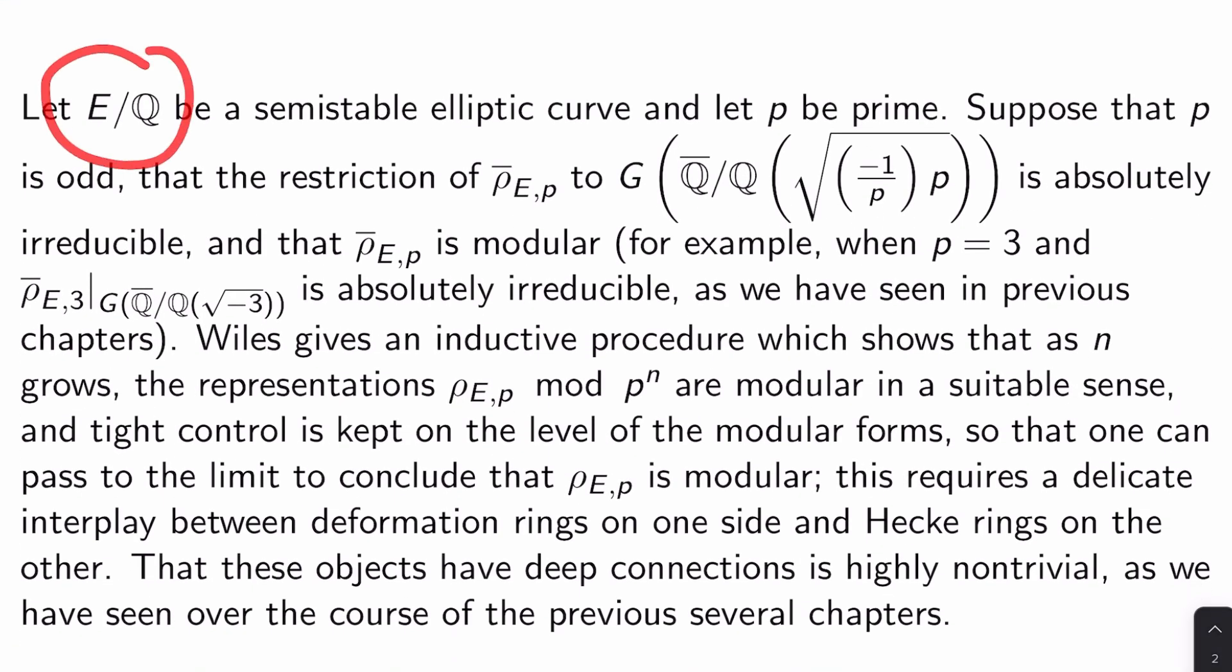Let E over Q be a semi-stable elliptic curve and let p be an odd prime. Suppose that the restriction of rho bar E,p to the Galois group of Q bar over Q adjoined square root negative one times the Legendre symbol (−1/p), so this is the Legendre symbol here, is absolutely irreducible and that rho bar E,p is modular. For example, let's say p is three. We would want rho bar E,3 restricted to the Galois group of Q bar over Q adjoined square root negative three to be absolutely irreducible. That follows from Langlands-Tunnell. So we've seen this in previous chapters.